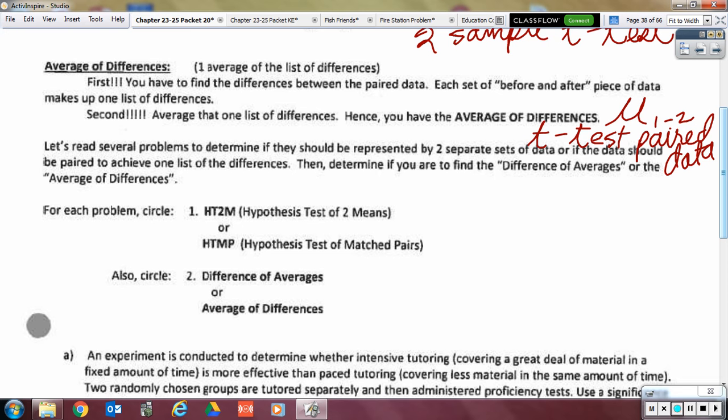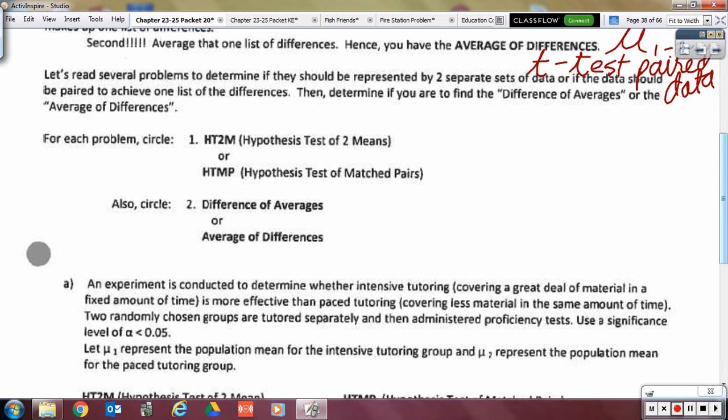We want to practice being able to read a situation and decide which one of those situations it is, because you calculate them differently. One of them, you do two sets of conditions. One of them, you do one thing in the calculator. The other one, you do just one set of conditions and a different thing in the calculator. So, we're going to use these phrases, hypothesis test for two means, or a hypothesis test for matched pairs. Matched pairs, paired data, those are interchangeable. And then, also, we'll circle if it's a difference of two averages versus the average, one average, of the differences.